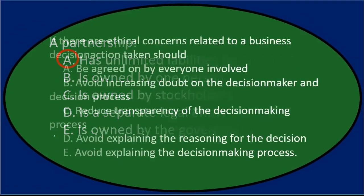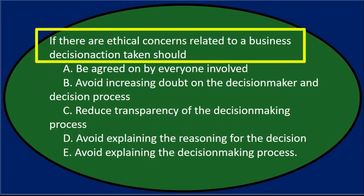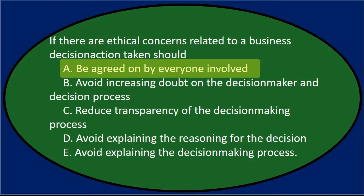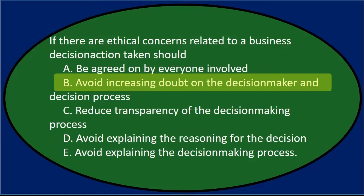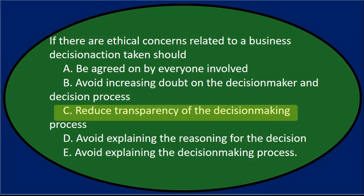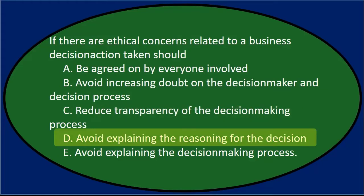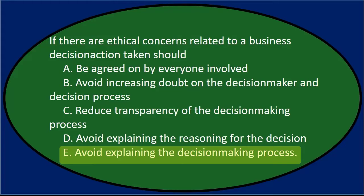Next: if there are ethical concerns related to a business decision-making process, the decision-making should — A: be agreed upon by everyone involved. B: avoid increasing doubt on the decision maker and decision process. C: reduce transparency of the decision-making process. D: avoid explaining the reasoning for the decision. E: avoid explaining the decision-making process. The answer is B — avoid increasing doubt on the decision maker and decision process.